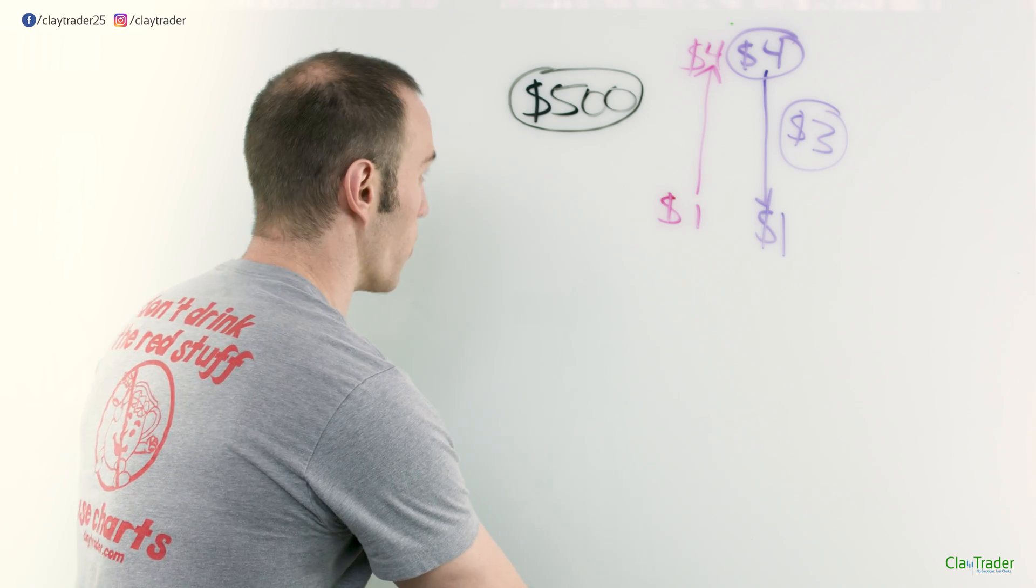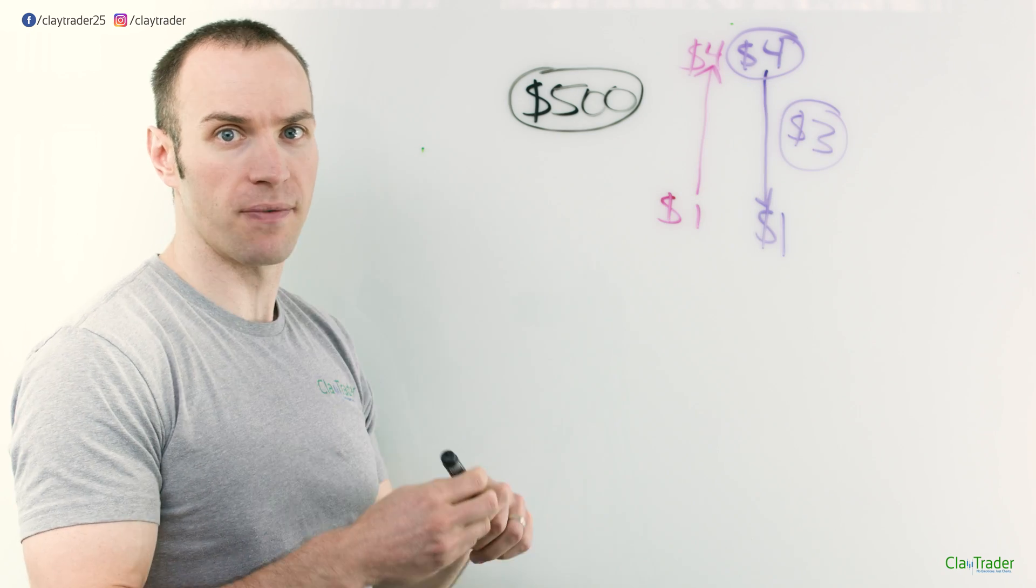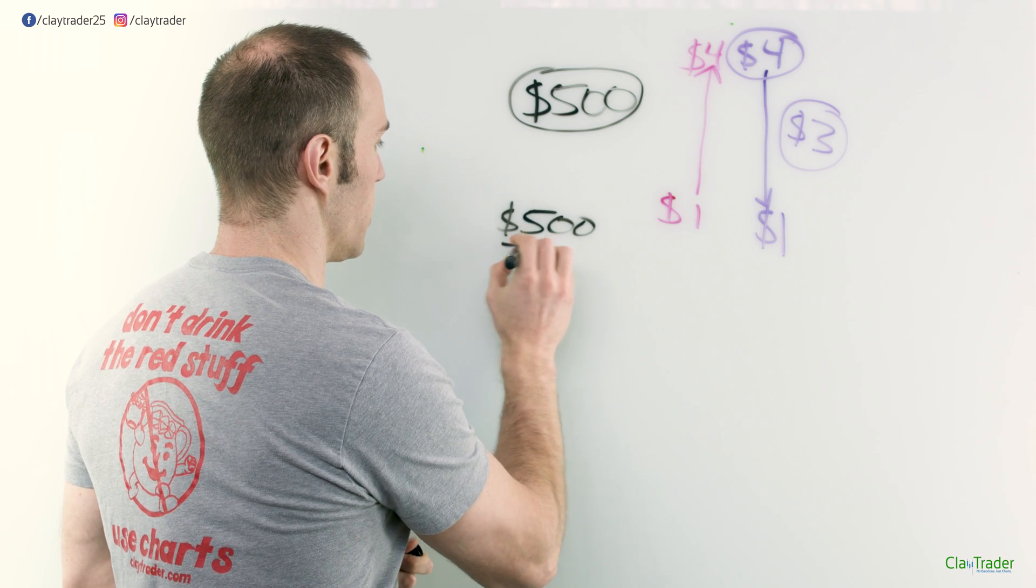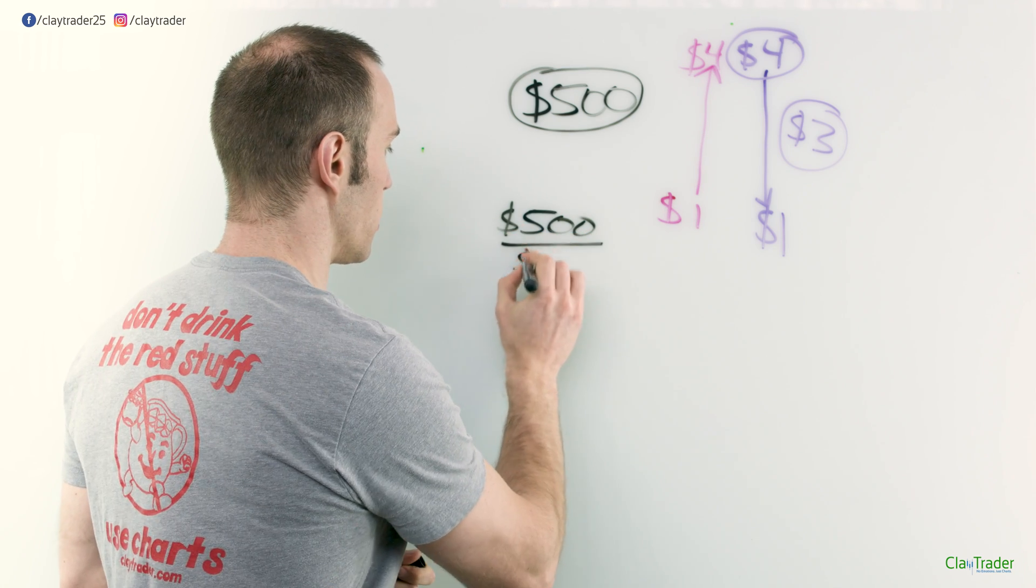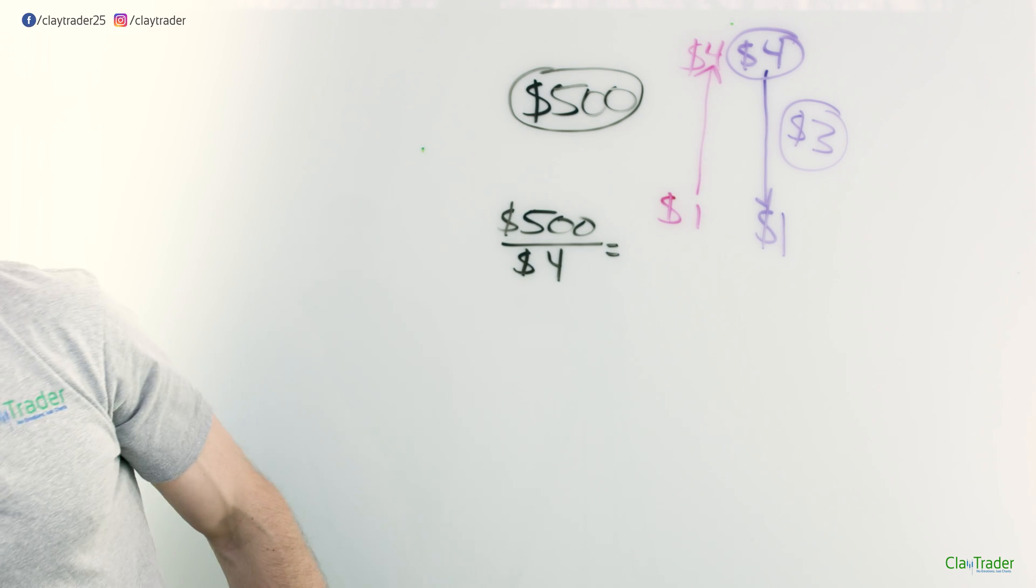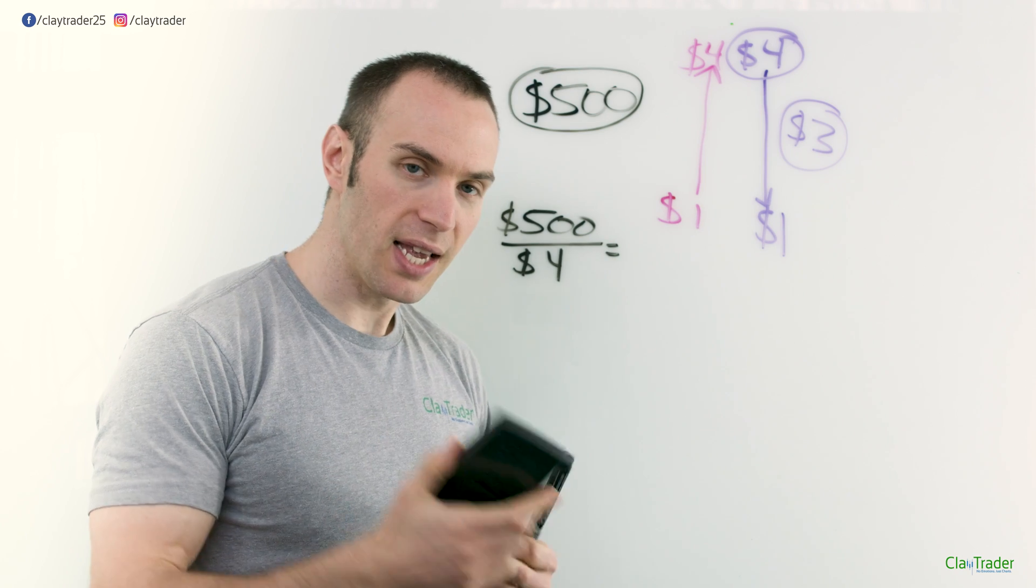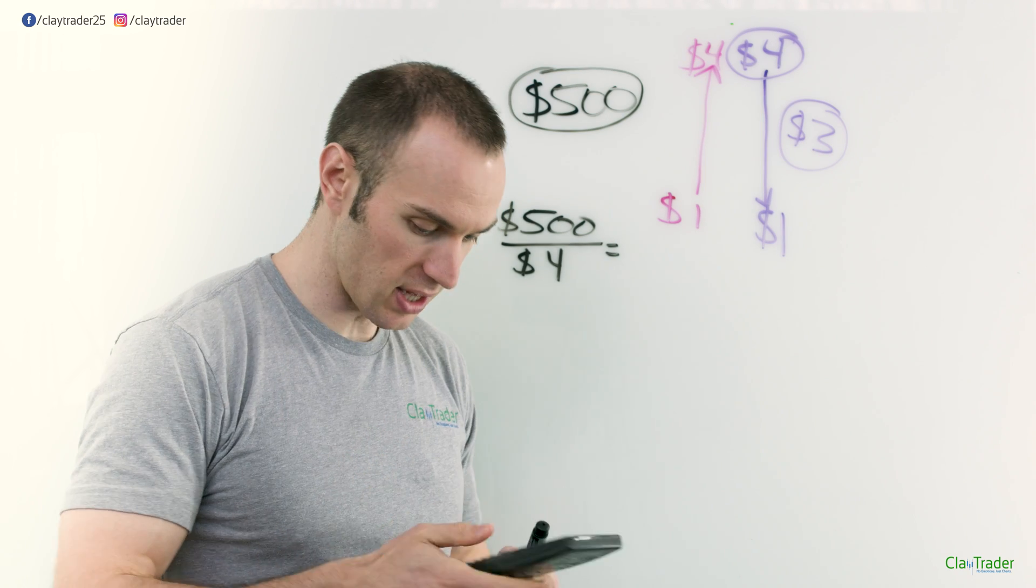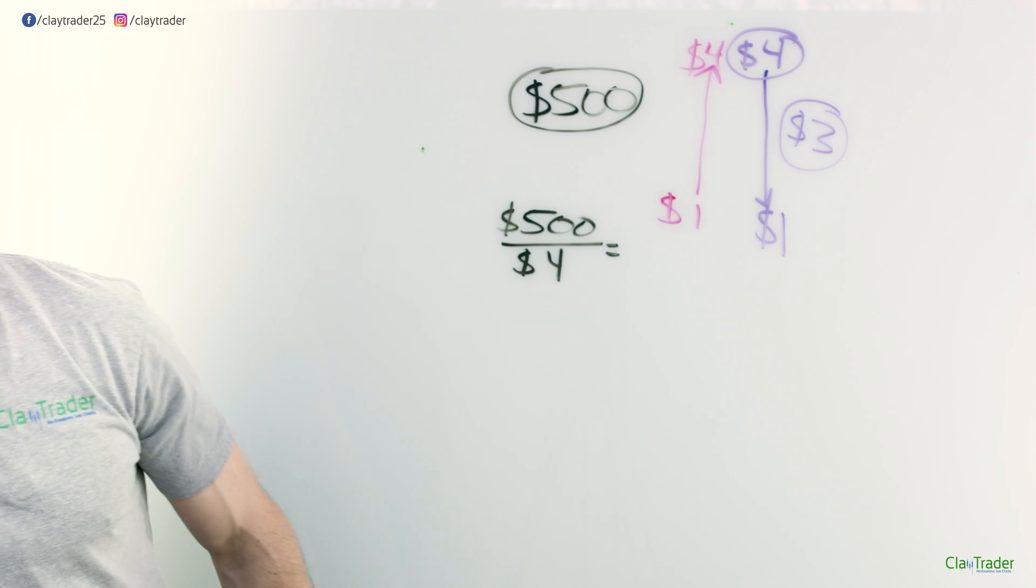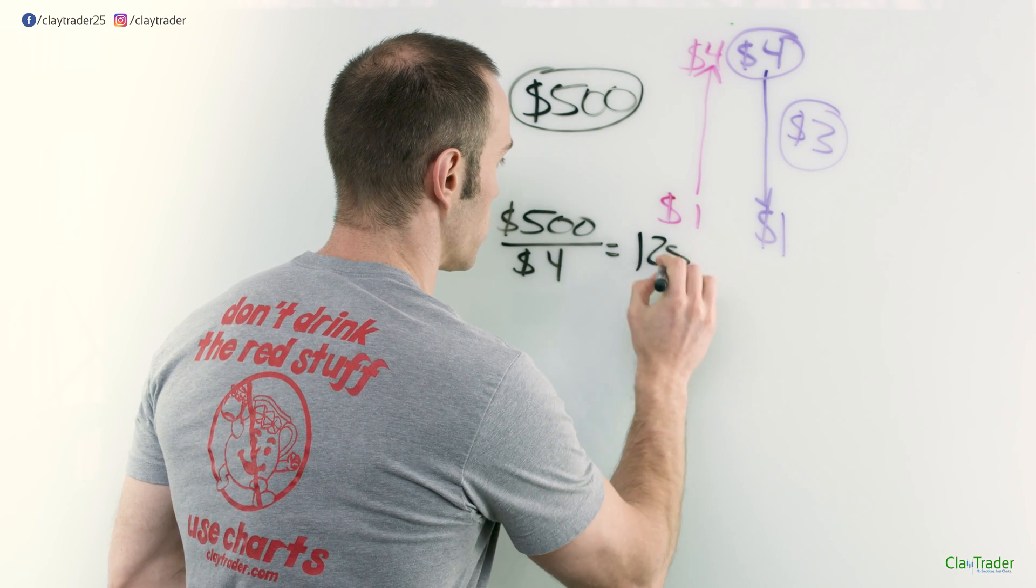So the question now becomes, you had $500, so how many shares could you have shorted for $4? So $500 divided by the price of $4. Let me grab my calculator. The TI-83, who remembers this thing? Classic. $500 divided by $4. Yeah, $125. So that means you have shorted 125 shares.